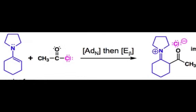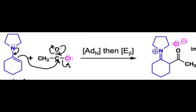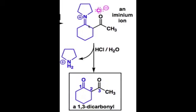Mechanistically, this reaction proceeds through addition of the nucleophile to the polarized pi bond of the acyl chloride, followed by elimination to kick off chloride anion and generate the iminium ion intermediate shown. After hydrolysis with HCl and water, the amine portion of the iminium comes off, and we're left with a 1,3-dicarbonyl compound.